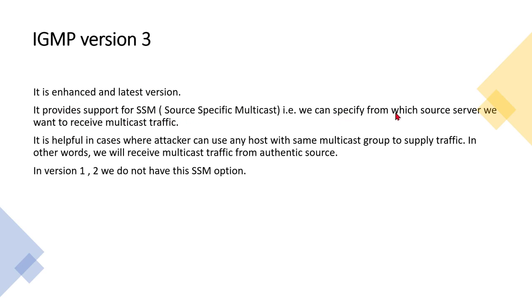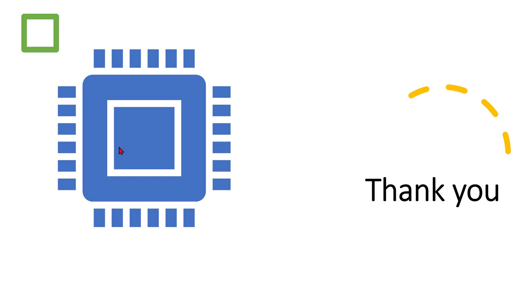Version three is helpful in cases where an attacker could use any host as a source on the same multicast group to inject traffic. Using IGMP version three with SSM, we receive multicast traffic only from an authentic source by specifying the source IP. That's it — this was just an introduction to IGMP. In the next lab I'll take you to GNS3 and show IGMP communication for version one, version two, and version three with debug output. Please give appropriate rating and feedback.